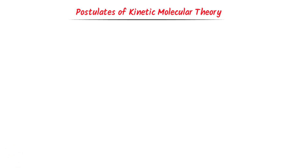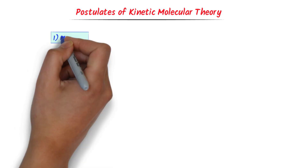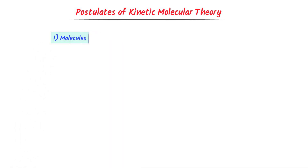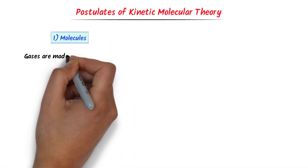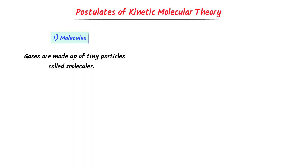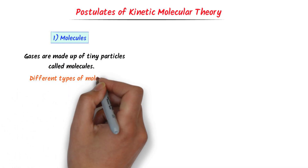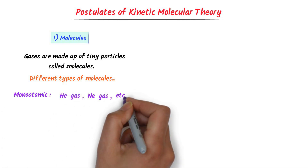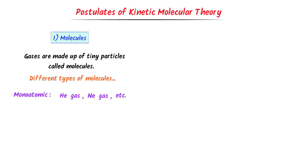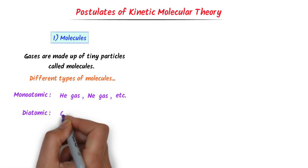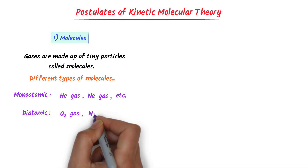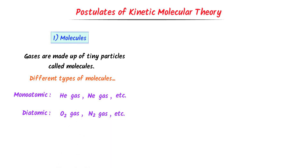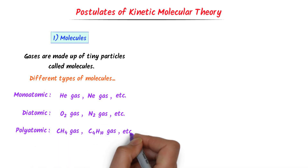The first postulate of the Kinetic Molecular Theory of Gases is about molecules. It states that gases are made up of tiny particles called molecules. Molecules may be monoatomic, like hydrogen gas or neon gas. A molecule may be diatomic, like oxygen gas or nitrogen gas. Or a molecule may be polyatomic, like methane gas CH4 or C4H10.